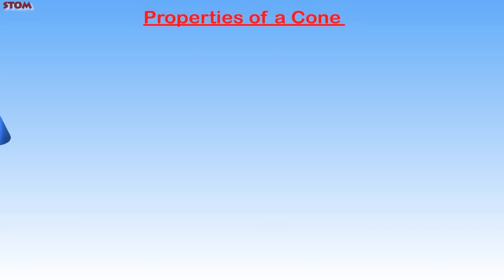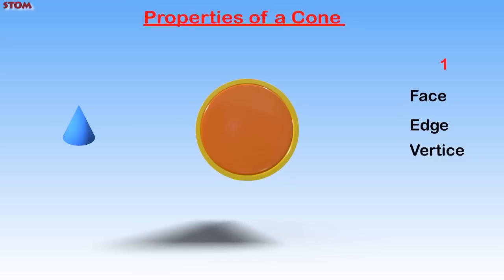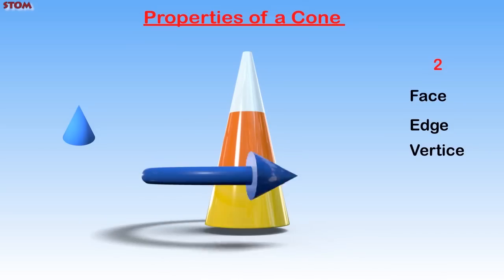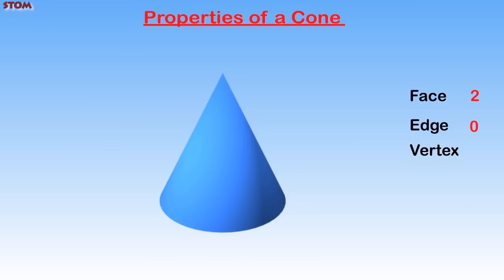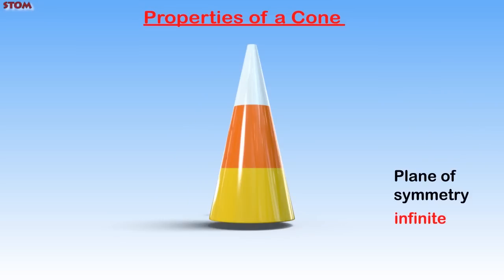Properties of a Cone. Considering the edges, vertices, and plane of symmetry: we can see that it has a circular face at the bottom and a curved surface, so the cone has two faces. It has no edges. The cone has just one vertex. A cone has infinite planes of symmetry, meaning that the planes of symmetry cannot be counted.